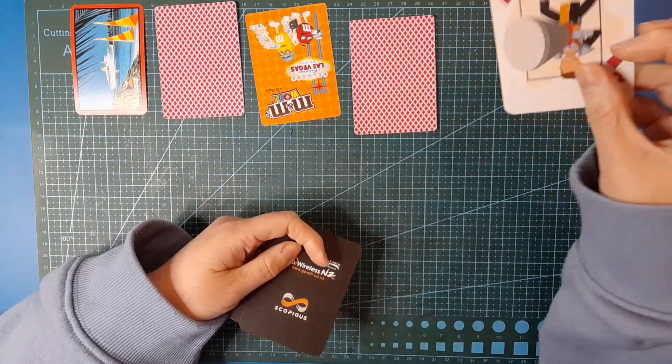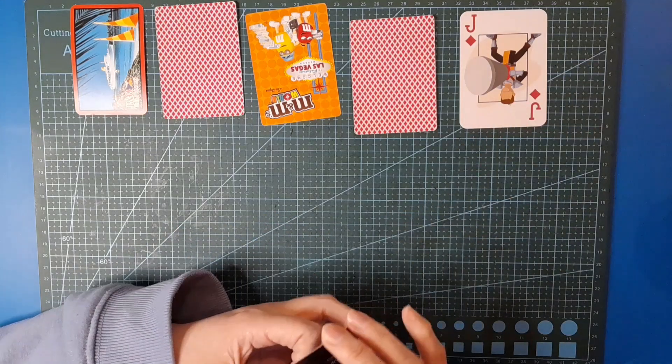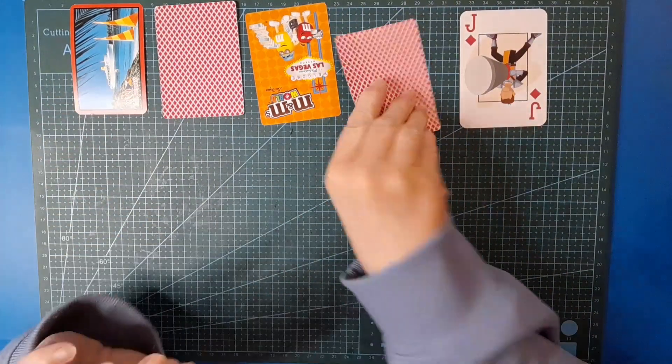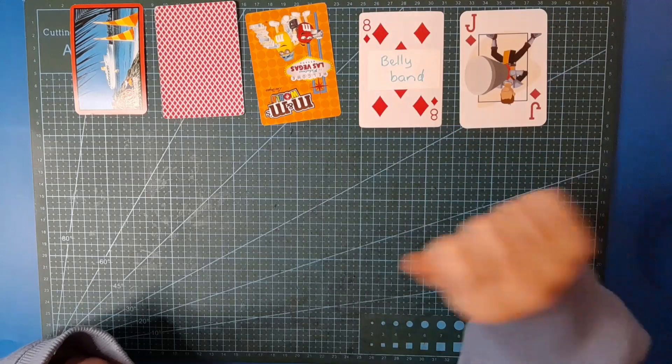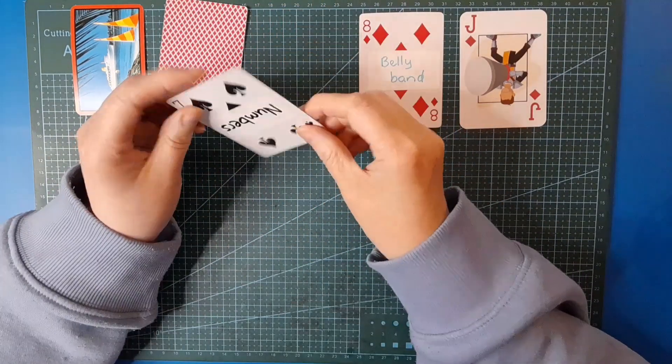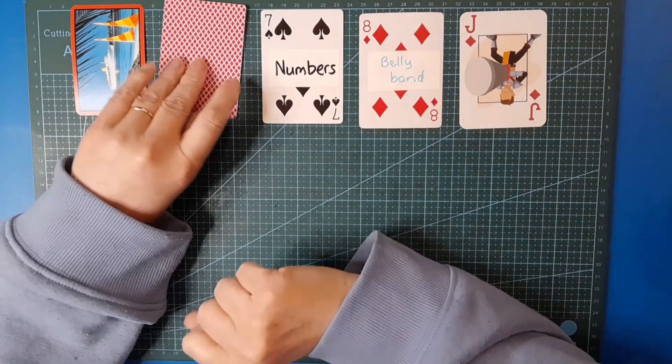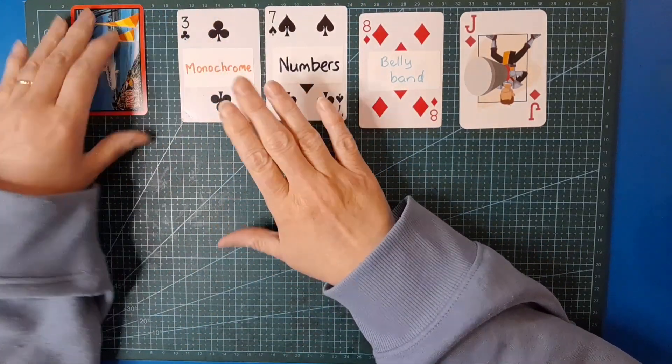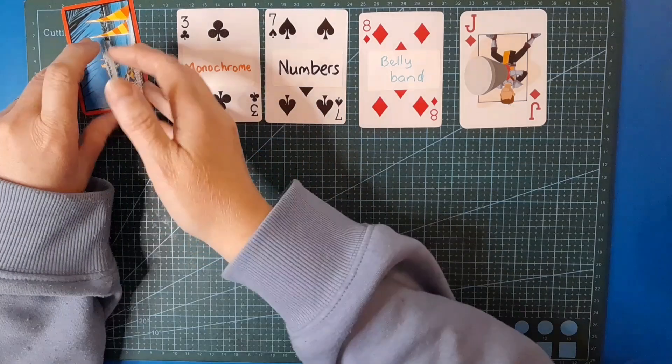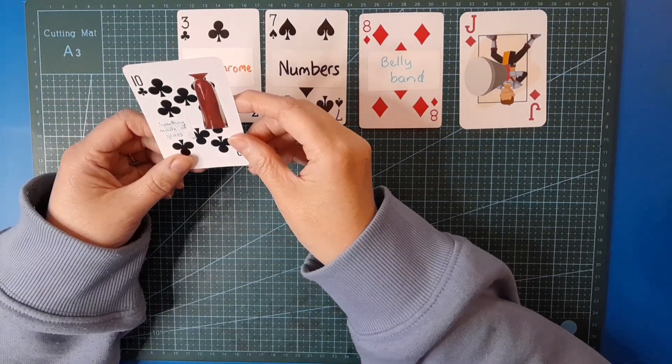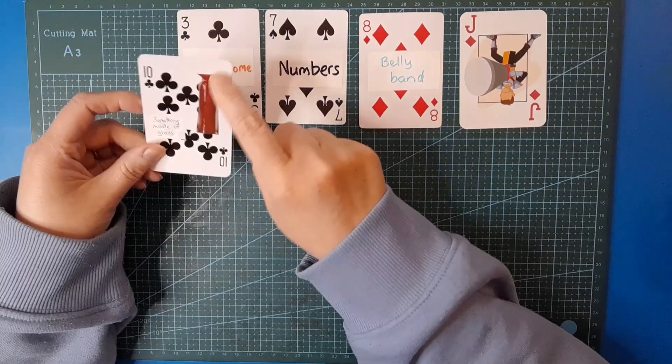Okay, how do you shuffle three cards? Let's take the top one and do the reveal - the Jack of Diamonds today. The alternate make is a belly band and our creative prompts are numbers, monochrome, and something made of glass. There's a picture of a vase.